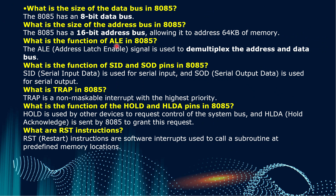Now let's go into slightly more detail about the 8085. What is the size of the data bus in 8085? The size of the data bus is 8-bit. What is the size of the address bus? The size of the address bus is 16-bit, allowing it to address 64 KB of memory.